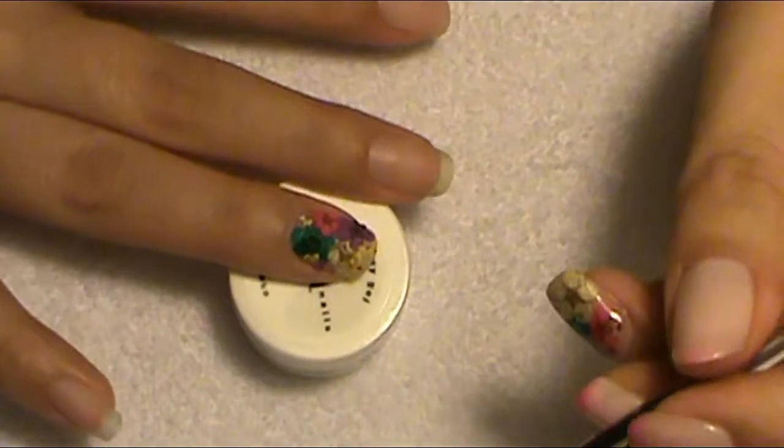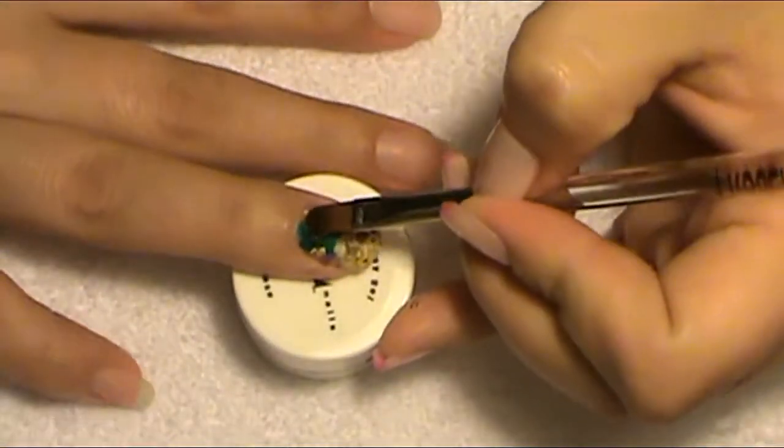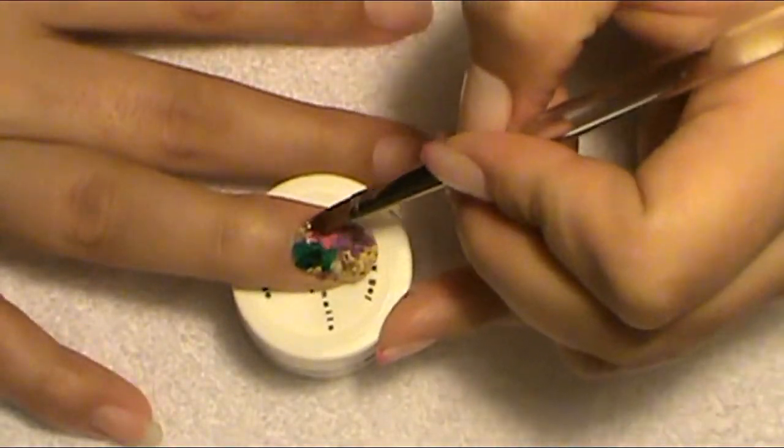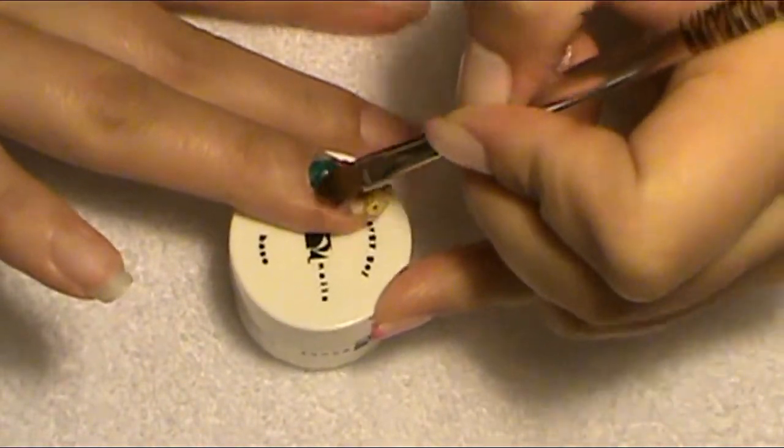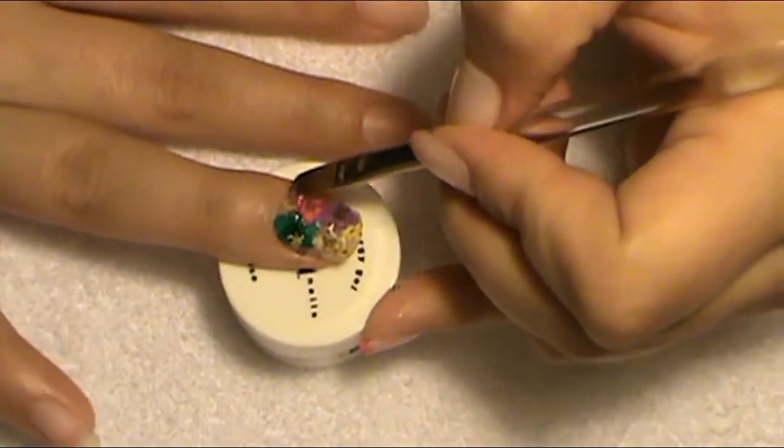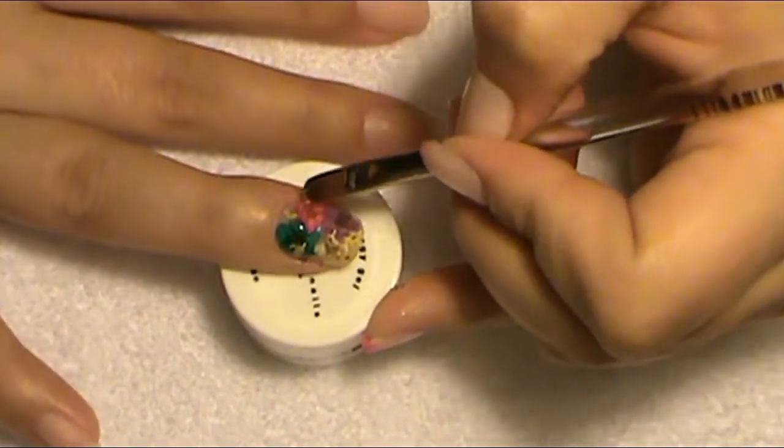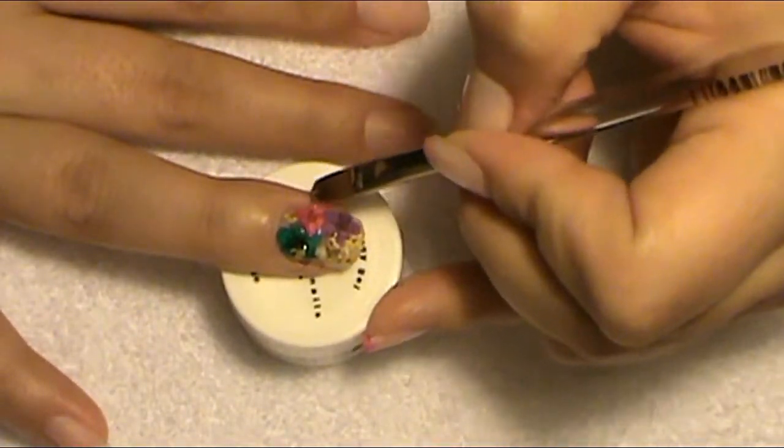So after I have all those down, I'm just going to take my build gel once again and I'm just going to encase all those flowers so they stick. And yeah, the ending result, it's so pretty, you'll see. But just like before, I'm just going to go in like little tiny layers. I don't like to grab a bunch of it at a time because like I said, it's really runny.